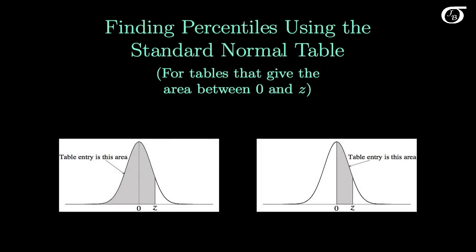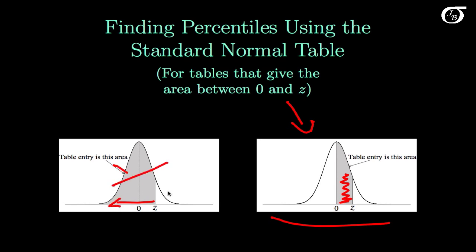Let's look at finding percentiles using the standard normal table. In this video, I'm going to investigate tables that give the area between 0 and Z. Another common type of table gives the area to the left — I'm not going to look at that in this video, I have another video for that. Here we are going to be looking at finding the value of Z for a given area. When we are given Z and need an area, I have a different video for that.